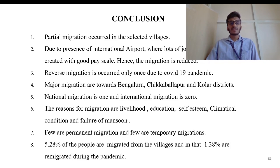Conclusion: identification of partial migration occurred in the selected villages due to the presence of an international airport nearby, where lots of job opportunities are created with a good pay scale, hence migration is reduced. Reverse migration occurred only during the COVID-19 pandemic. The major migration is towards Bangalore as it is an IT hub, and Chikbalapur and Kolar district as it is an industrial hub.